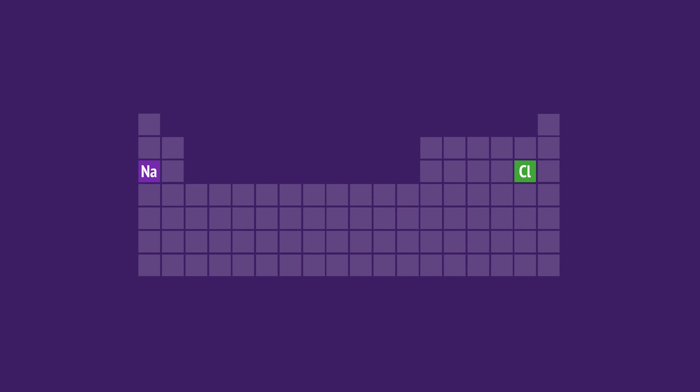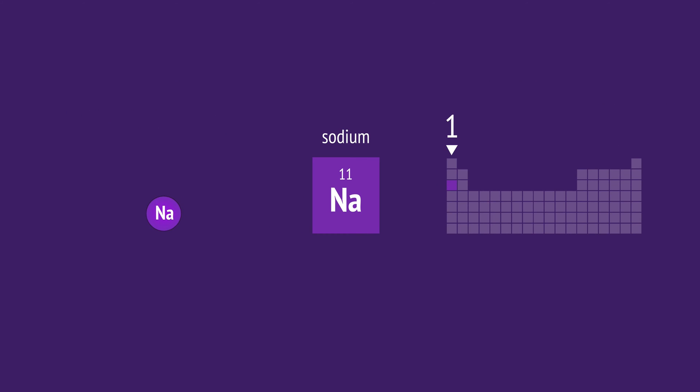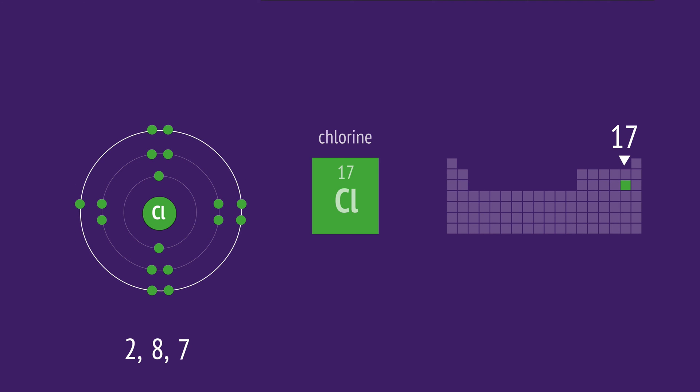Sodium chloride is a compound of the metal sodium and the nonmetal chlorine. Sodium is in group 1, so it has one outer electron. And chlorine is in group 17, so it has seven outer electrons.